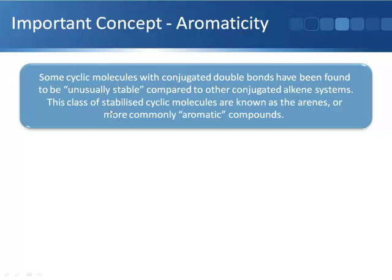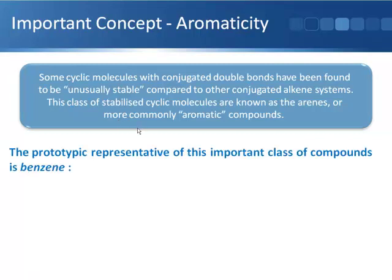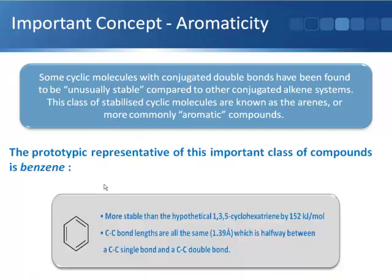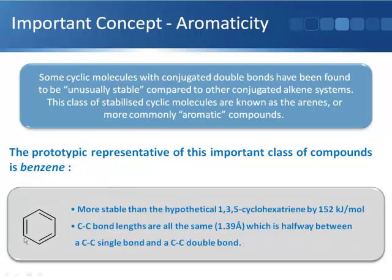There are some cyclic conjugated systems that are even more stable than you would expect for a series of conjugated double bonds. The prototypical example is benzene, which is found to be more stable than the hypothetical 1,3,5-cyclohexatriene by quite a lot — by 152 kJ per mol.